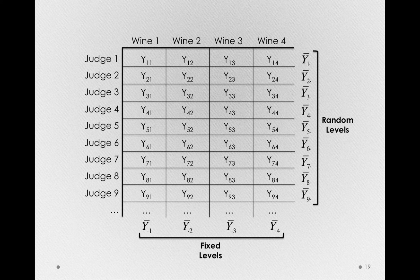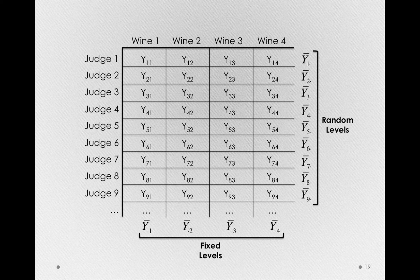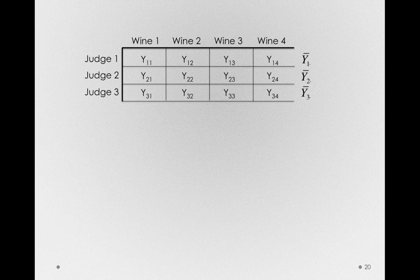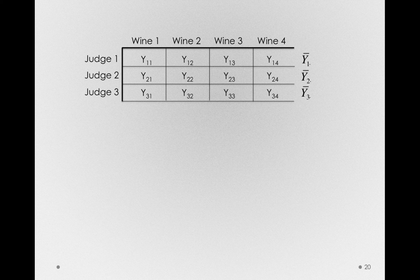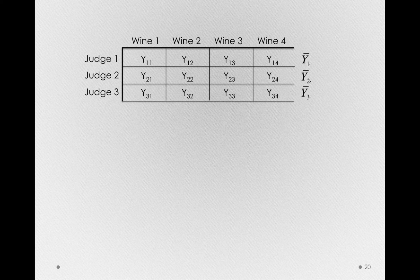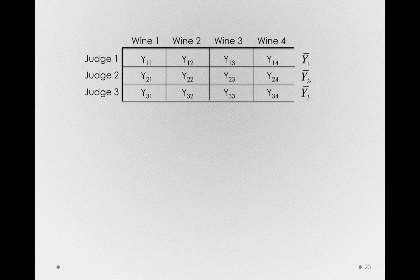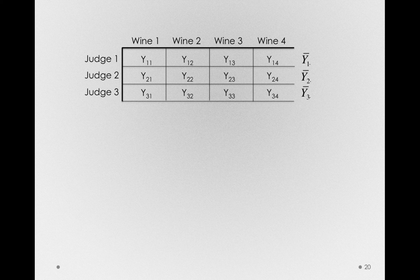Before we fit this model in JMP, I want to give you some insight into how we're going to model or decompose the means that we obtain for our fixed and random factors. I want to consider just a subset of these observations and see how our model will actually handle the fact that judge observations are correlated with each other. The observations for judge one across the four wines are not independent, but by bringing our judge terms into the model and modeling the mean for each judge, we'll actually be able to remove that correlation or non-independence.